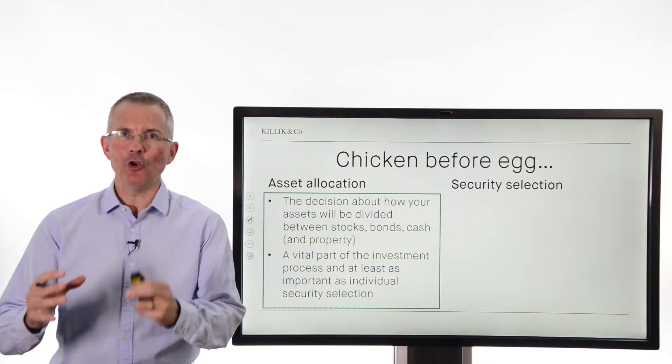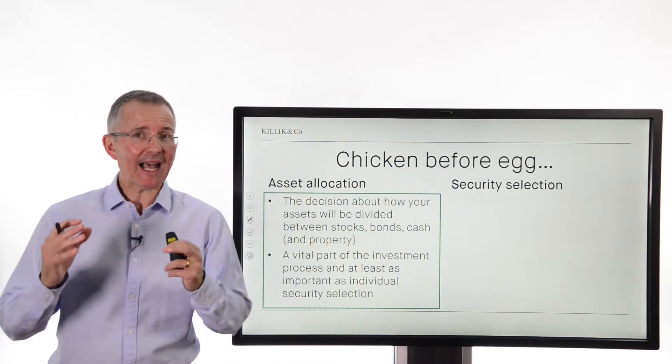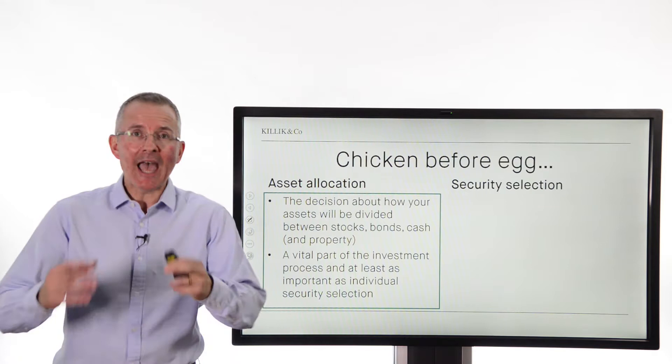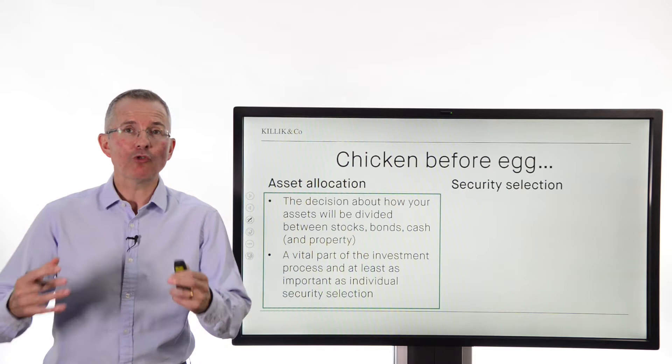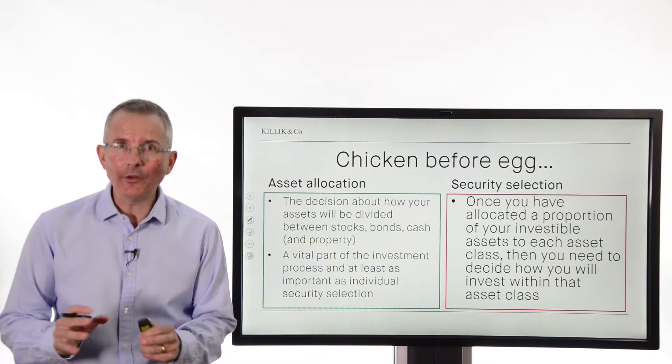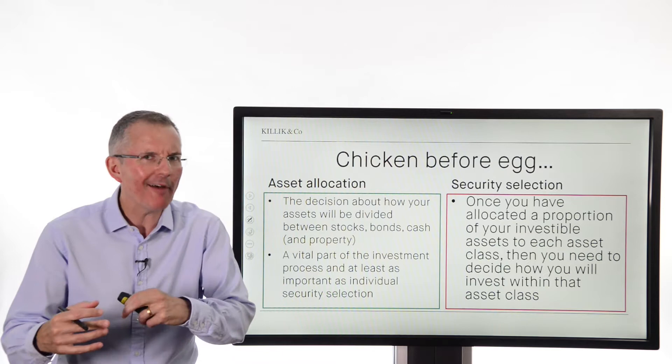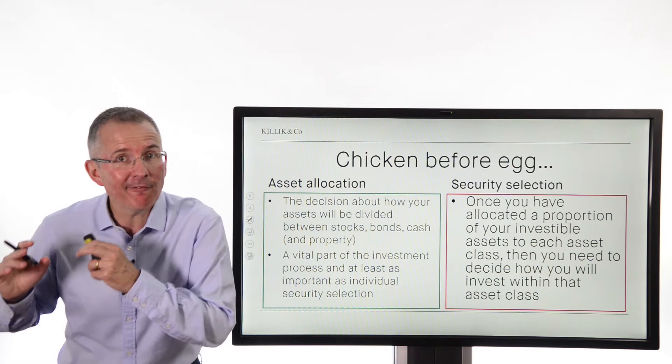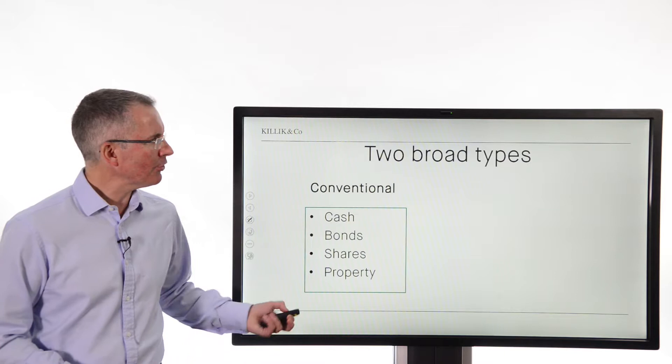The thought process is this: asset allocation is the stuff you do before worrying about which individual securities you're going to buy. This is not 'do I buy BP or Shell?' Asset allocation is the top-level, vital decision about where your assets are divided. How much goes into stocks? How much into bonds and cash? How much into property? Given that most people try to own their own home, that often takes care of their property allocation. So we're looking at the split between stocks and bonds and cash. Once you've allocated your assets, then by all means worry about individual security selection — do I buy a fund, do I run a portfolio? But that very much comes second. Get your asset allocation right first.